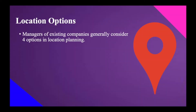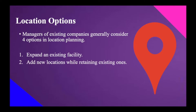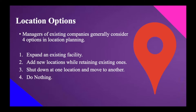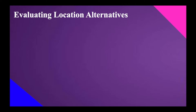So for location options, managers or business owners of existing companies generally consider four options in location planning. First, expand an existing facility. Second, add new locations while retaining the existing ones. Third, shut down the existing ones at one location and move to another location. And lastly, do nothing — status quo. That is the four location options of managers usually in location planning.